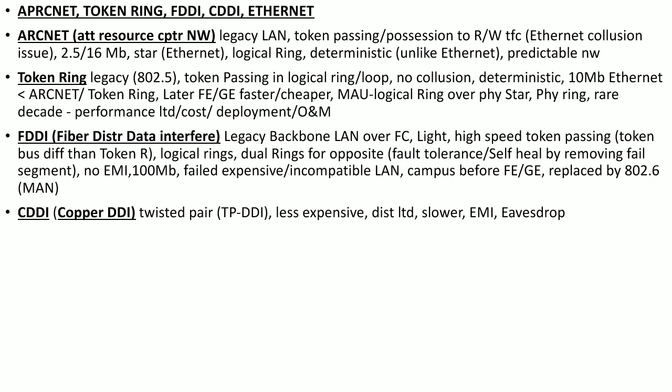Another version of this distributed data interface technology is the Copper Distributed Data Interface or CDDI, because in FDDI it used fiber with no copper. They introduced CDDI, also called the Twisted Pair Distributed Data Interface, because it uses twisted pair. It is less expensive but there is a distance limitation due to copper, it is slower, and it is also prone to electromagnetic interference and eavesdropping.